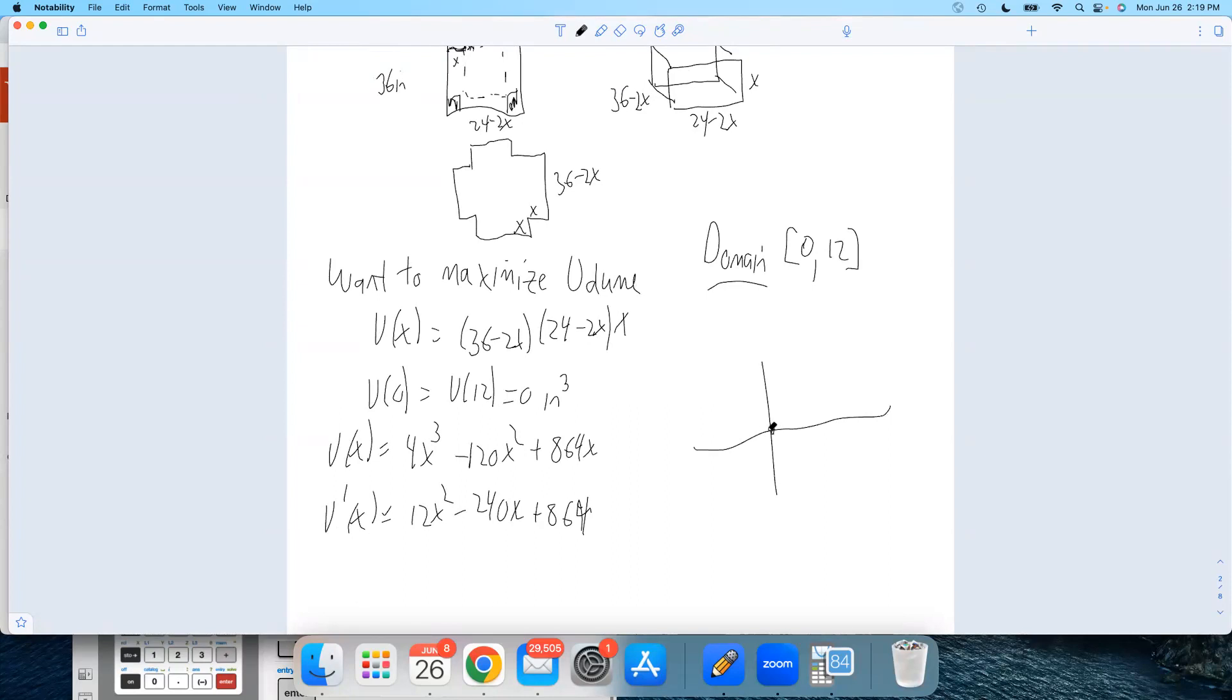We know at zero it's zero and at 12 it's zero. And we know the graph is going to look something like this. Because we've taken college algebra and we know how to graph cubics. Now there's some other root over here. We could find it. It's 18 if you're curious, because that would make this zero. But this is what we're looking for right there.